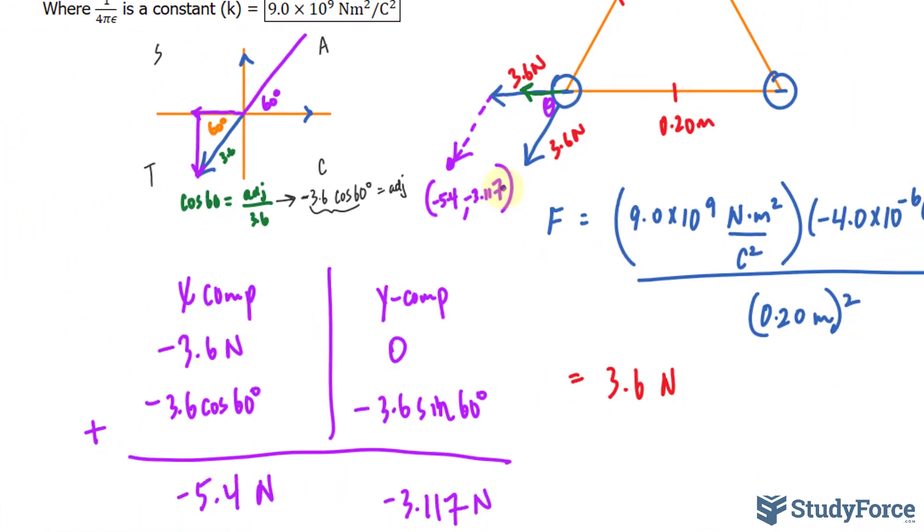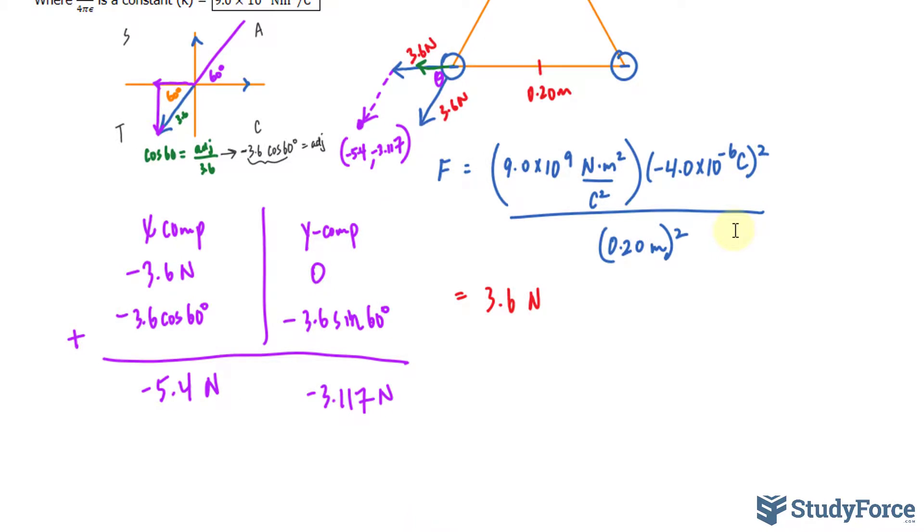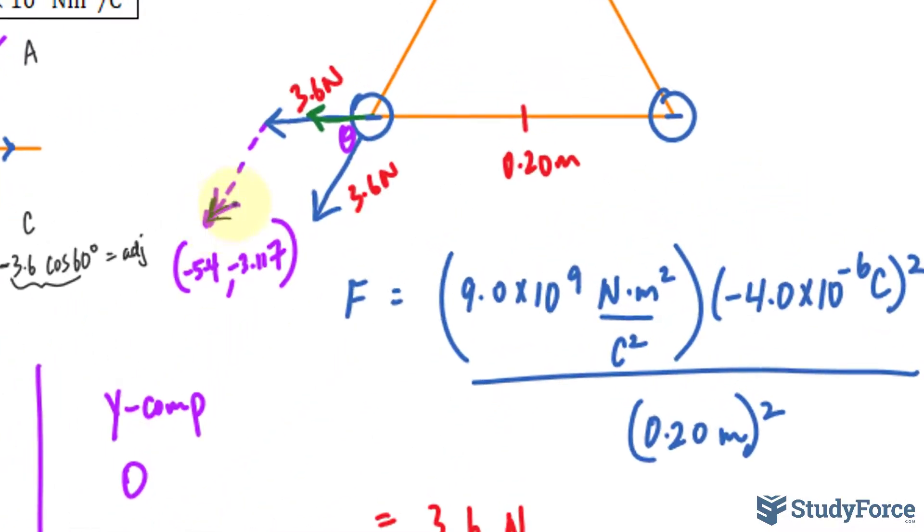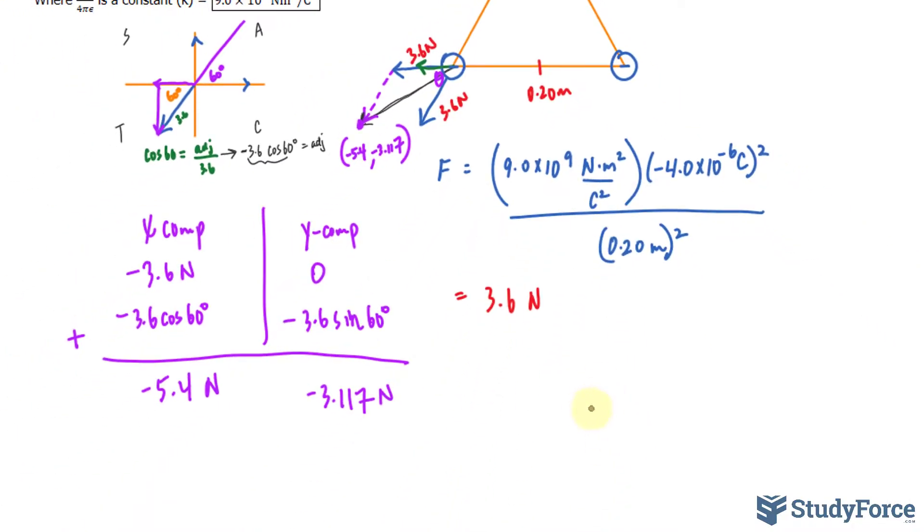Now we have to find out the magnitude of that vector using the Pythagorean theorem and the overall direction. So we're looking for the magnitude of this black vector and its direction, the angle. So the Pythagorean theorem, I'll say f is equal to negative 5.4 raised to the power of 2 plus negative 3.117 raised to the power of 2. That will give us our magnitude.